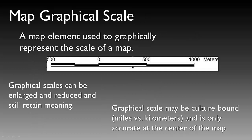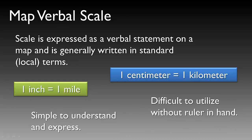Graphical map scales are elements placed on the map that represent the scale, and can be enlarged or reduced while still retaining meaning. It's important to remember that graphical scales may be culture-bound, meaning you need to understand whether your audience understands miles versus kilometers or meters versus feet. A verbal scale is expressed as a verbal statement and is generally written in standard local terms, such as '1 inch equals 1 mile' or '1 centimeter equals 1 kilometer.' They are simple to understand and express, however it's difficult to utilize without a ruler in hand.